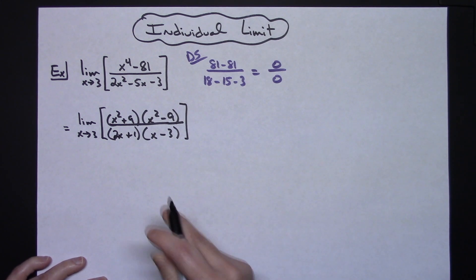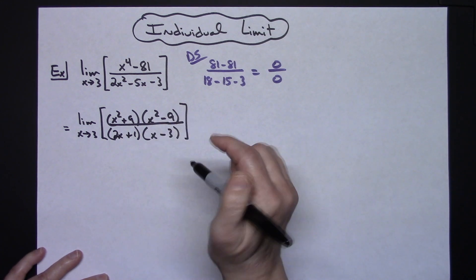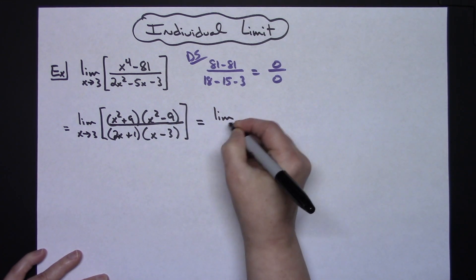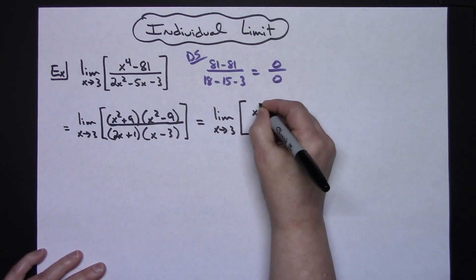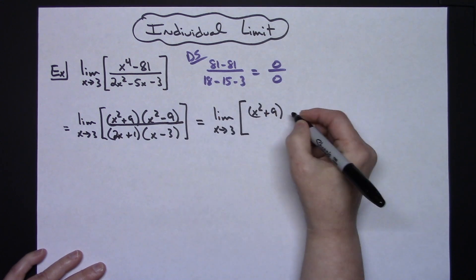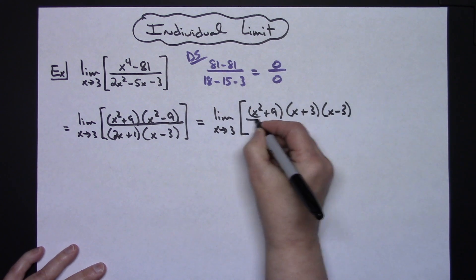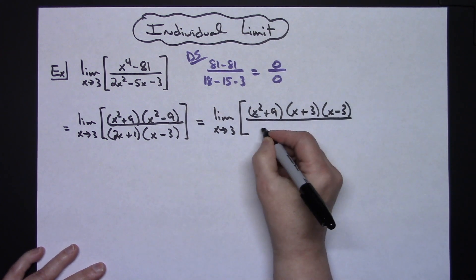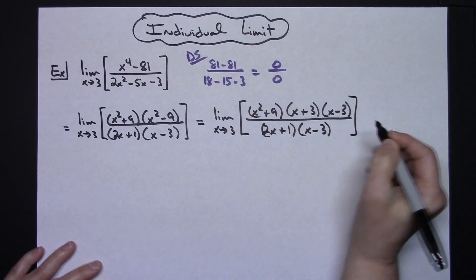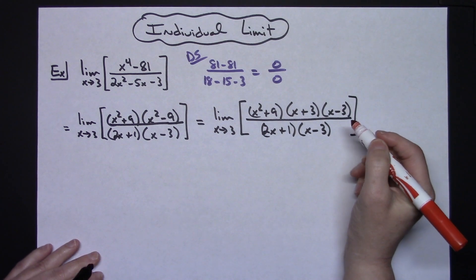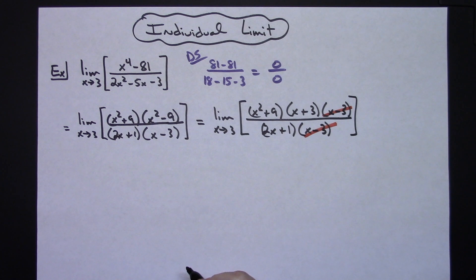At that point nothing crosses out yet, but if you continue to look you see another difference of two squares right there. So we can factor again, giving us the limit as x approaches 3. The x squared plus 9 stays. Factoring that top further gives an x plus 3 and an x minus 3. The bottom stays as 2x plus 1 and x minus 3. Now I can cross out the x minus 3s, which was the whole point of factoring.